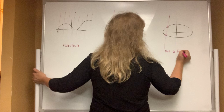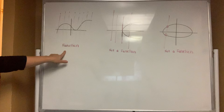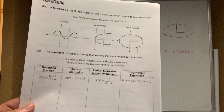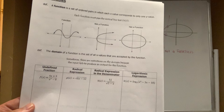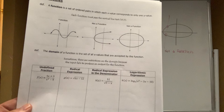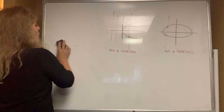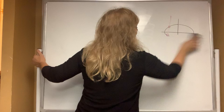In order for something to be a function, it must pass the vertical line test, which the first one does. Below that it talks about the domain — you have to know that the domain of a function is the set of all x values that are actually accepted by the function. Sometimes you have restrictions on the domain because the input would fail to produce an output. I gave you four basic examples below, and you are going to have to know how to determine the domain of each of these four examples.